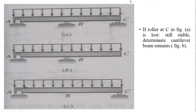Now, if the roller at C in this figure A is lost, that means if we remove this roller, still the stable determinate cantilever beam remains as shown in figure B. We have removed the roller at C, but still this beam doesn't become unstable. It only becomes determinate. Originally it was indeterminate. Now the roller at C is removed, it became determinate, but it doesn't become unstable.